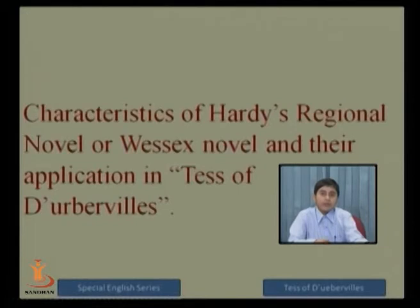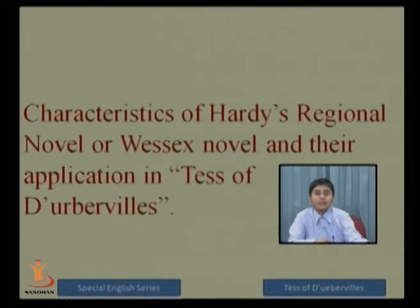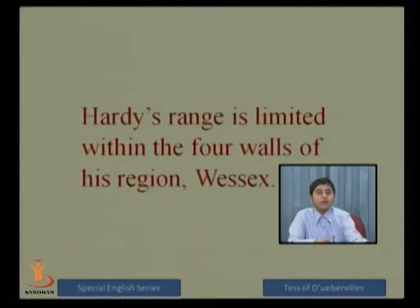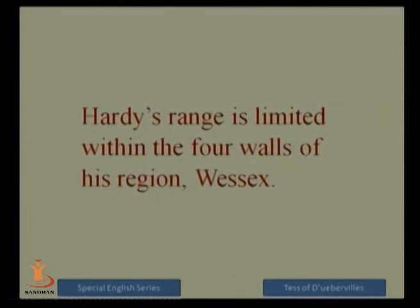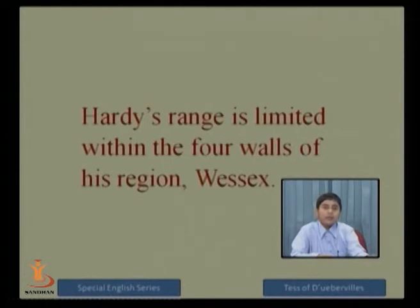Now I will discuss some characteristics of regional novels, and after discussing all these characteristics, our main focus will be on their application in Tess of the d'Urbervilles. The first characteristic of the regional or Wessex novel is that Hardy's range is limited within the four walls of his region. Hardy does not look beyond this region — whatever he experienced living there, he wrote about. Hardy has not taken any interest in mentioning another region or country.